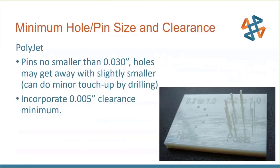For PolyJet detail, you can get much thinner on parts and hole sizes because of the DPI. Holes down to 30 thousandths work well. When getting smaller than that, you may want to ream them out or touch up with a drill. Also important: about 5 thousandths clearance is the minimum if you're making posts to go into holes. We'll talk about clearance more in design considerations.